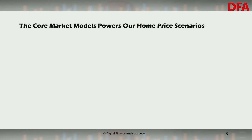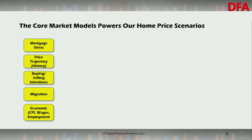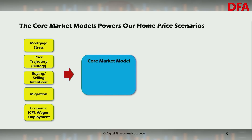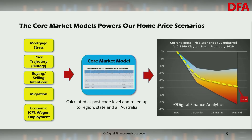As I've been saying for some time, we can do quite a lot of analysis based on our core market model, which essentially pulls information from a whole range of sources to try and interpret what's going on down on the ground. We can pull information from mortgage stress, price trajectory data, buying and selling intentions from our surveys, migration data, and broader economic information such as CPI, wages and unemployment. All of that goes into our core market model, which drives our five scenarios, updated regularly, and pushes out information at a specific postcode level as well as region and state level, giving us an overall trajectory.